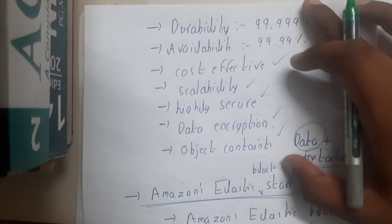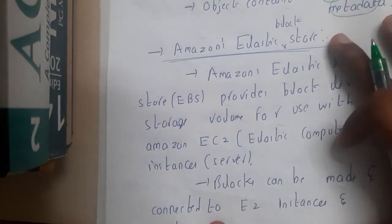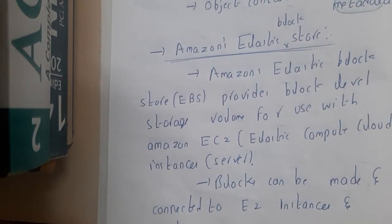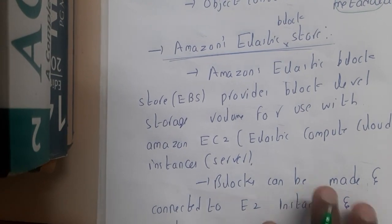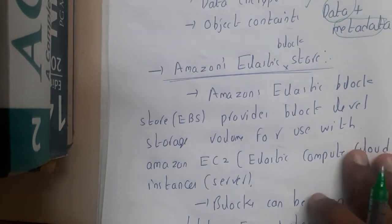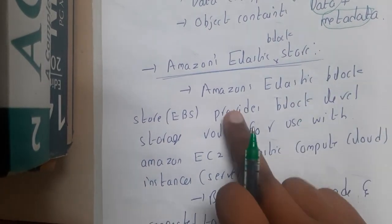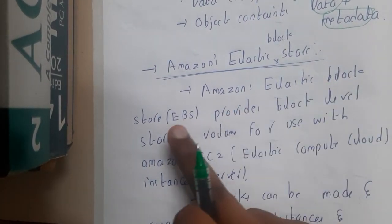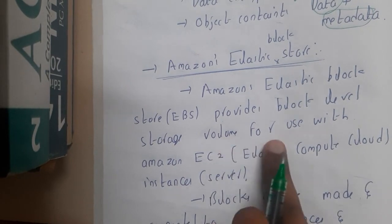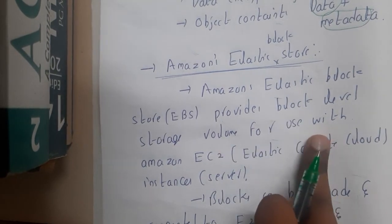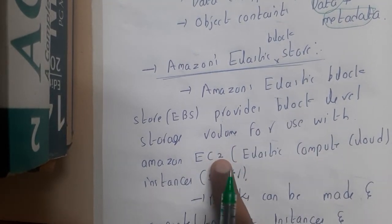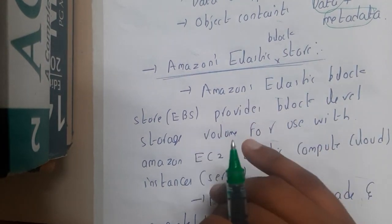The second storage is Amazon Elastic Block Storage, also known as EBS. Previously with S3 we stored data in terms of objects, but here we store in terms of blocks — that is the major difference. Amazon EBS provides block-level storage volumes for use with Amazon EC2.